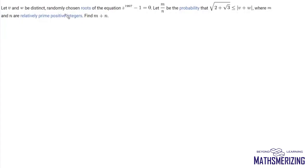Here the question is: let v and w be distinct randomly chosen roots of the equation z to the power 1997 minus 1 equals 0, and let m over n be the probability that root of 2 plus root 3 is less than or equal to mod of v plus w, where m and n are relatively prime positive integers. Find m plus n.